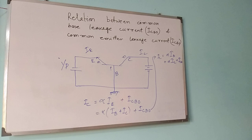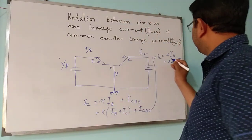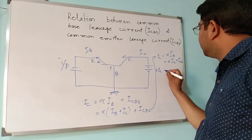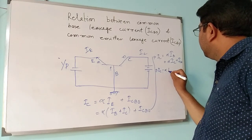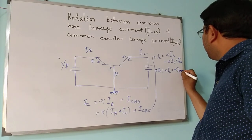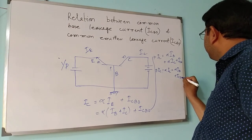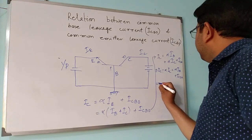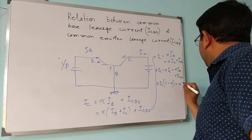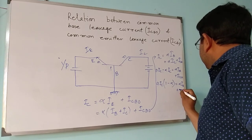Now, what is the relation between α and β? If I simplify, taking IC to the left-hand side: IC minus α·IC equals to α·IB plus ICBO. Taking IC common, IC into (1 minus α) equals to α·IB plus ICBO.